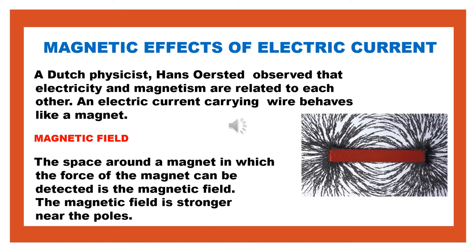Let us see what is the magnetic effect of electric current and how it is produced. Previously we have learned about the heating effect of electricity — that is, when an electric current passes through a conductor it produces heat due to the collision of the moving ions and the atoms of the conductor.